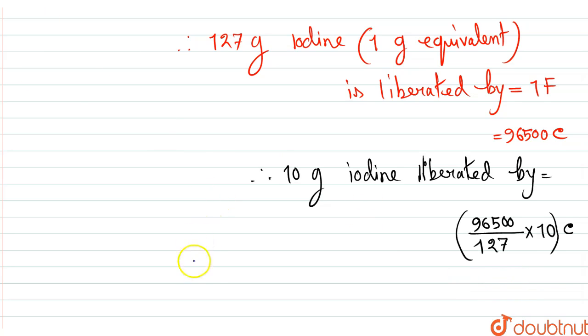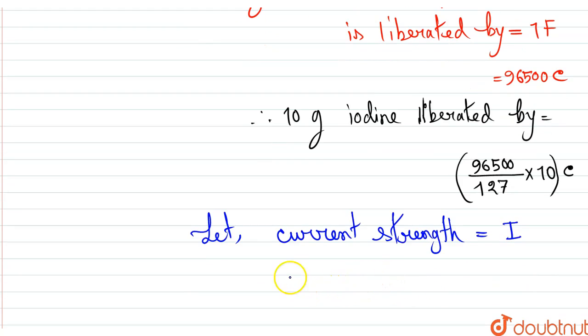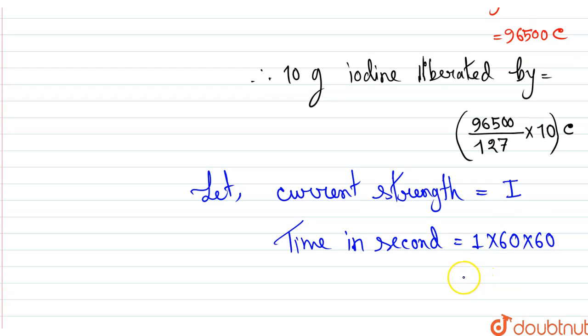Now let us assume the current strength be I. The time given is one hour, so if we convert the time in seconds, it will be 1 × 60 × 60.